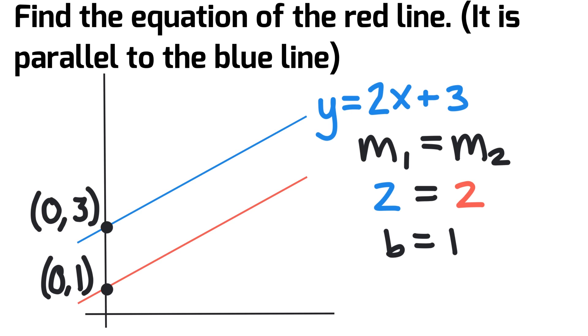So now we take the m and B values. We say our final equation of the red line is y equals 2x plus 1.